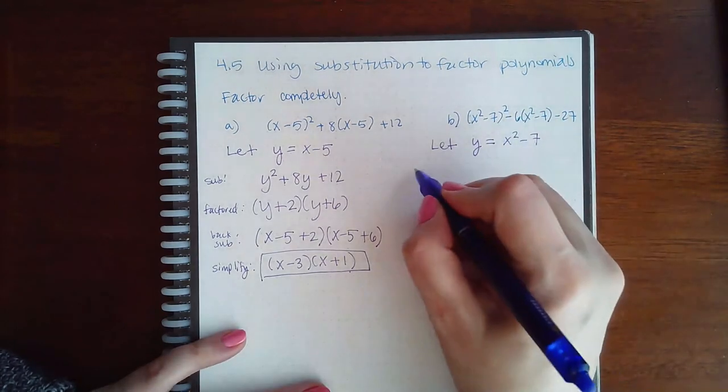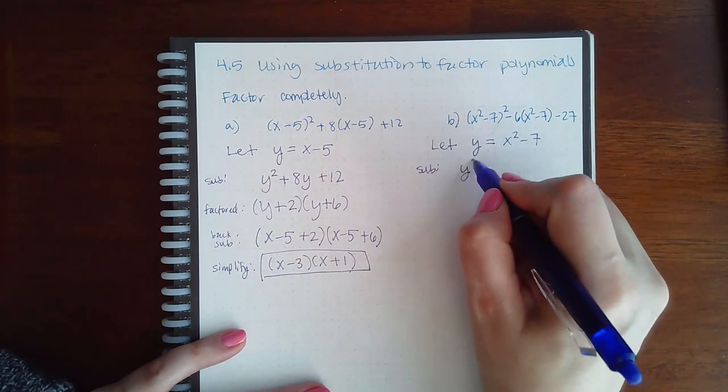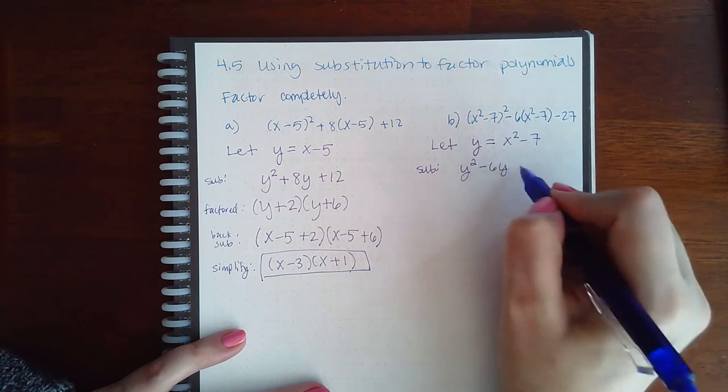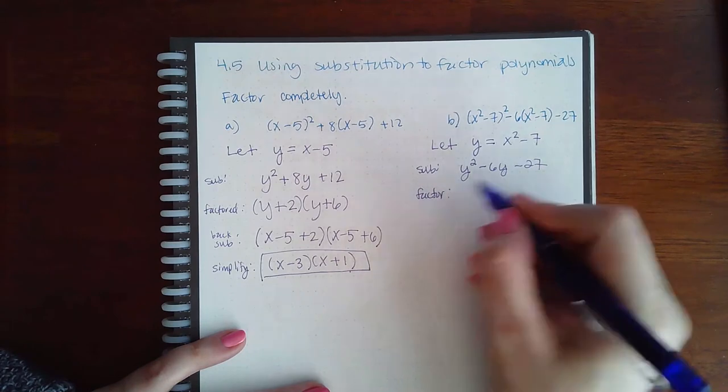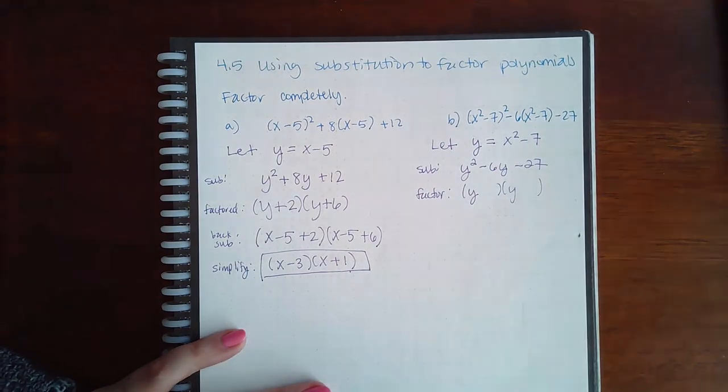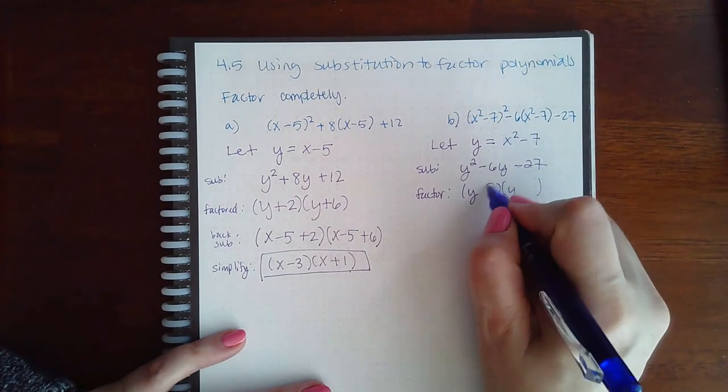Then we're gonna substitute. So this whole thing becomes y squared minus 6 times that whole thing again, y, minus 27. Then you factor. Since there's no number in front, we can use the shortcut: just y times y. And then factors of 27 that subtract to give me 6 is going to be 9 and 3, or 3 and 9—it doesn't matter what order.